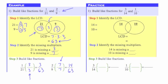Step 1 is to identify the LCD, starting by factoring both denominators. For 14, the prime factorization is 2 times 7, and for 10 it's 2 times 5. Once we have these factored, we put the factors into the Venn diagram. They have a common factor of 2, so that goes in the overlap. 14 also has a factor of 7, and 10 has a factor of 5. Multiplying all three factors together gives the LCD: 7 times 2 times 5 = 70. The least common denominator is 70.